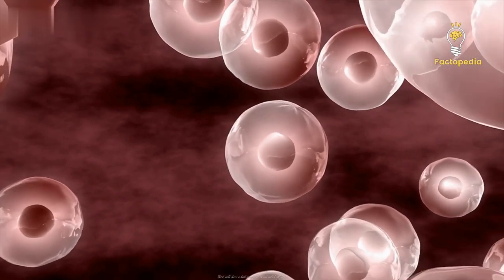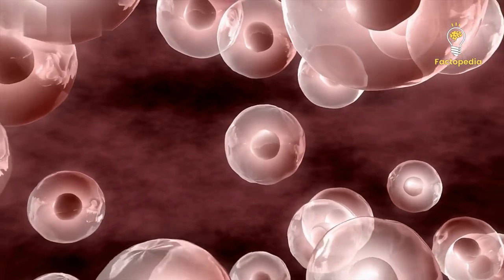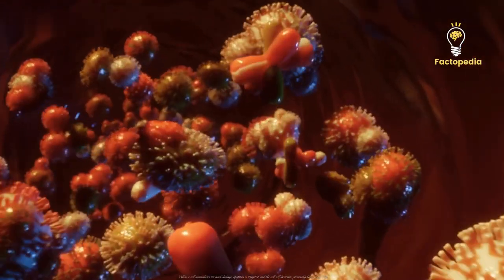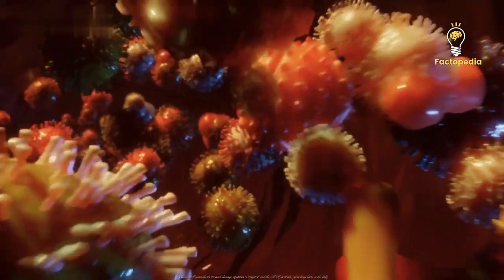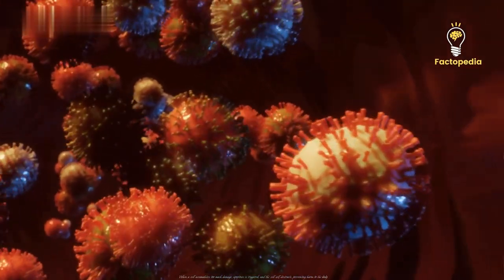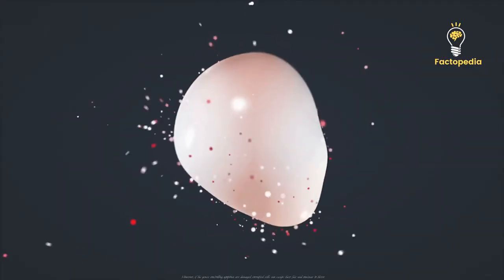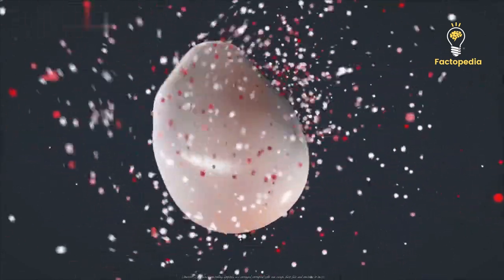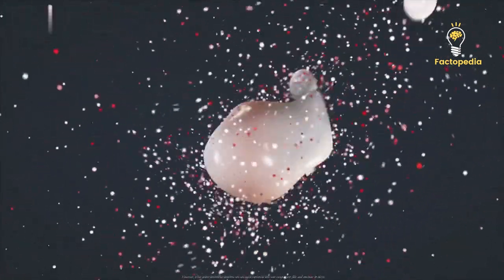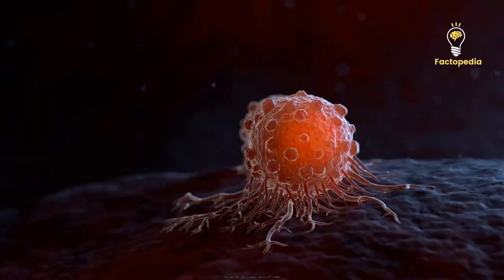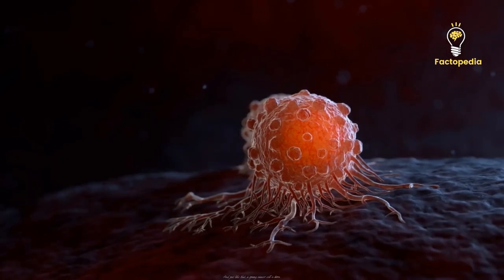Third, cells have a built-in suicide switch called apoptosis. When a cell accumulates too much damage, apoptosis is triggered, and the cell self-destructs, preventing harm to the body. However, if the genes controlling apoptosis are damaged, corrupted cells can escape their fate and continue to thrive. And just like that, a young cancer cell is born.